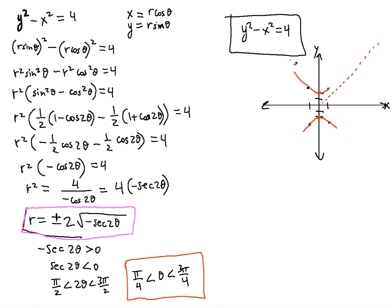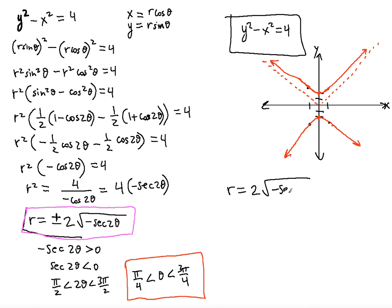The angle 3 pi over 4 is the other asymptotic line, and the hyperbola will approach it as well. Now you might ask: how does the other branch of the hyperbola fit in, since we're only talking about theta from pi over 4 to 3 pi over 4? Let's break this down. For r equals positive 2 radical negative secant 2 theta, let's test theta equals pi over 2.